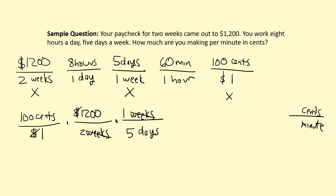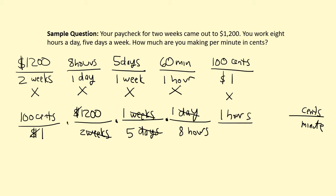Next I have days. There are no days in my answer, so I need to cancel them out. The second rate has days in it, so I flip it: for every one day that goes by, you work eight hours. That cancels the day unit. Now I have hours, but my answer needs minutes, so I'll use the last rate — 60 minutes per one hour — placing hours on top to cancel with the hours on the bottom, and 60 minutes goes on the bottom.